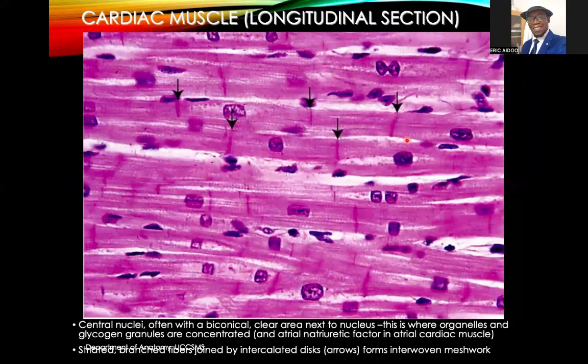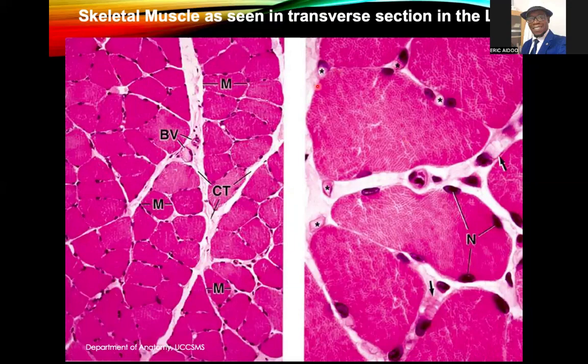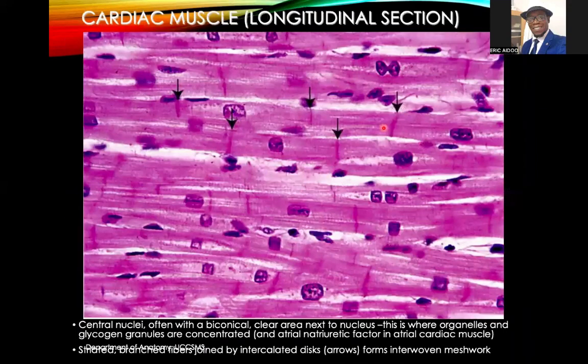So that was for skeletal muscle. You should be able to tell — once you see the multinucleation and then the superficial positioning of the nuclei, that should be skeletal muscle. You shouldn't confuse yourself at all.